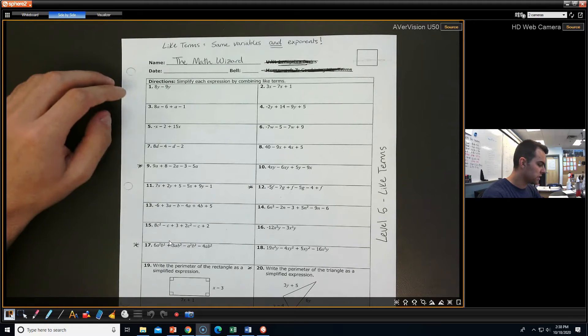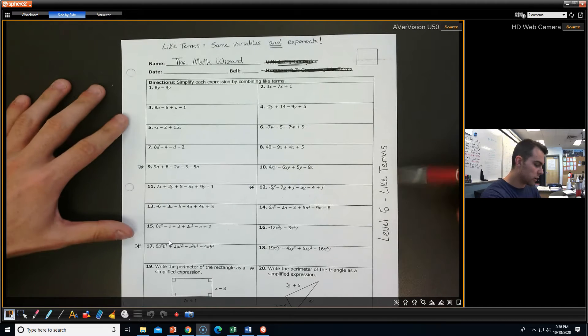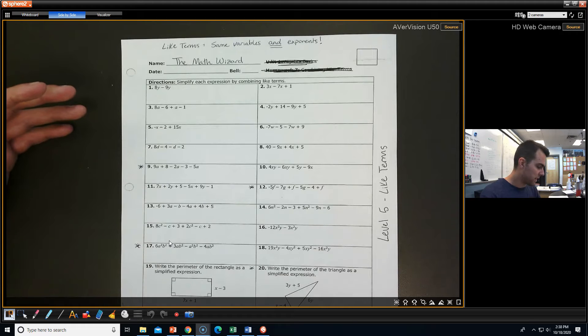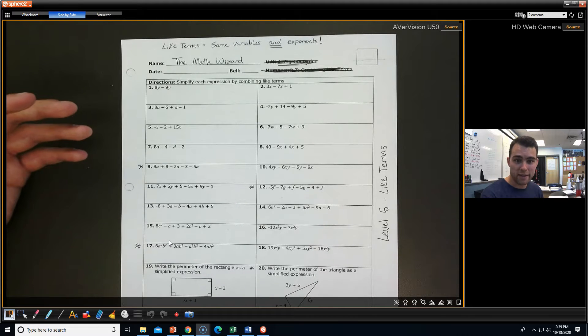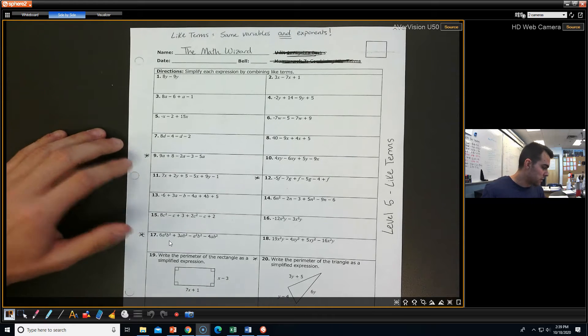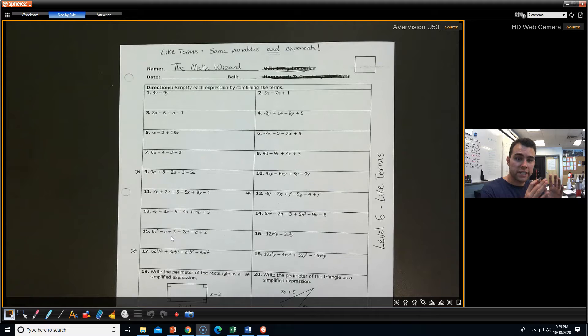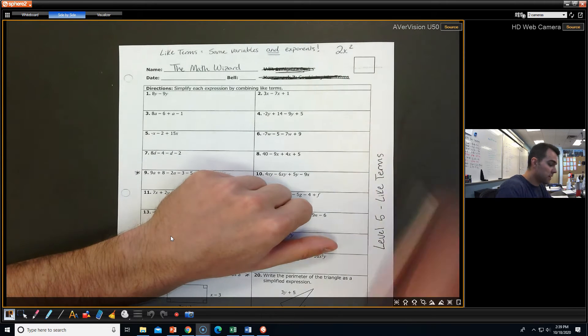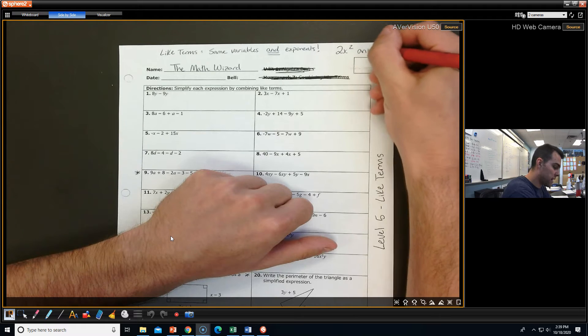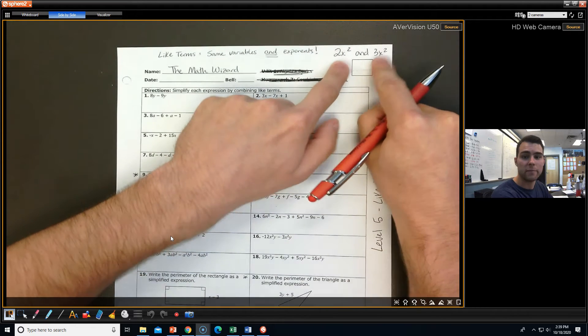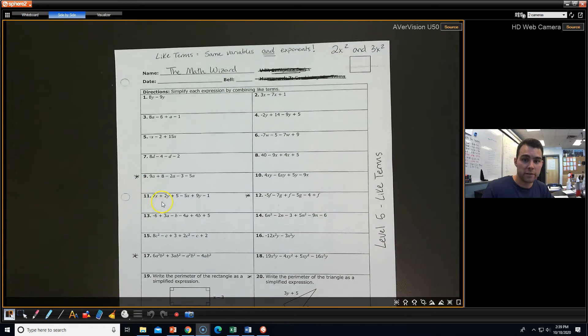So, we're going to start on this side, which is simplifying like terms, so our level 5 side, and we're not going to do all the problems, but I'm going to pick out a couple here and there that I think might give you a hard time. Really, like terms, remember, you can add and subtract the numbers in front if they are the same variables and exponents. So, like 2x² and 3x squared, that's an example of like terms. Both have the same variable and the same exponent. So, I could do 2x² + 3x² and get 5x².